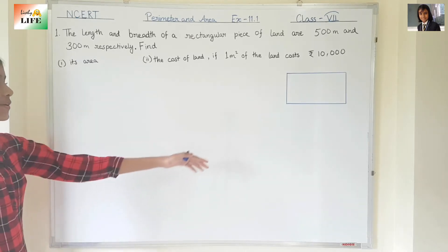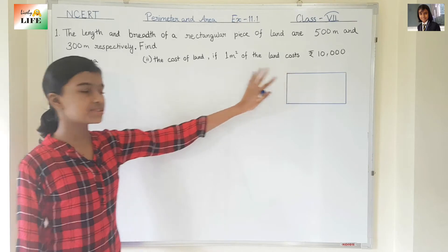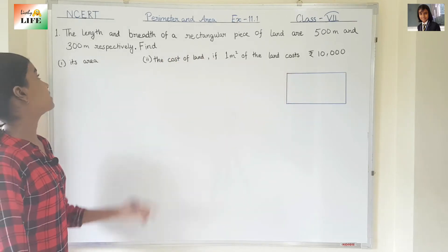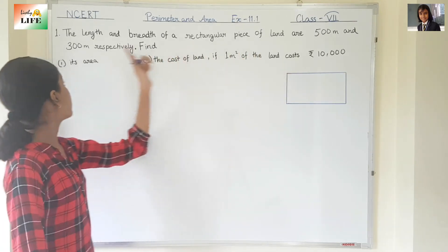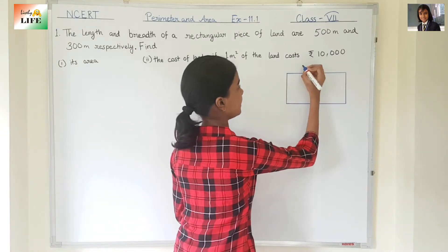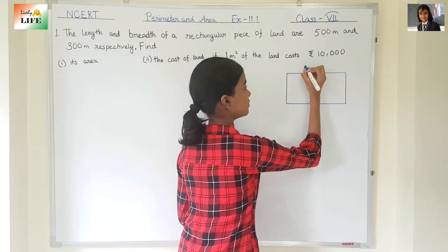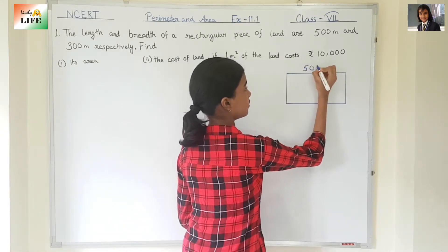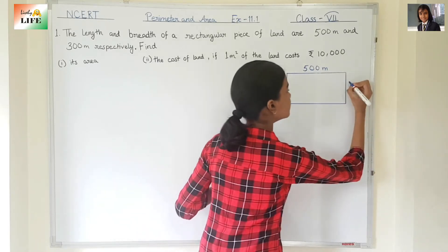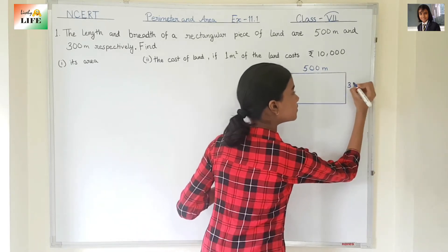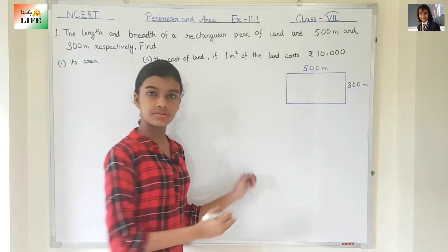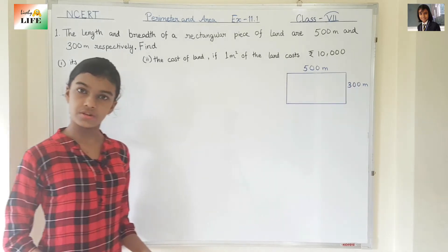You can see the rectangle — suppose this is the rectangular piece of land. The length and breadth are 500 and 300 meters respectively. This is the length, 500 meters, and the breadth, 300 meters.